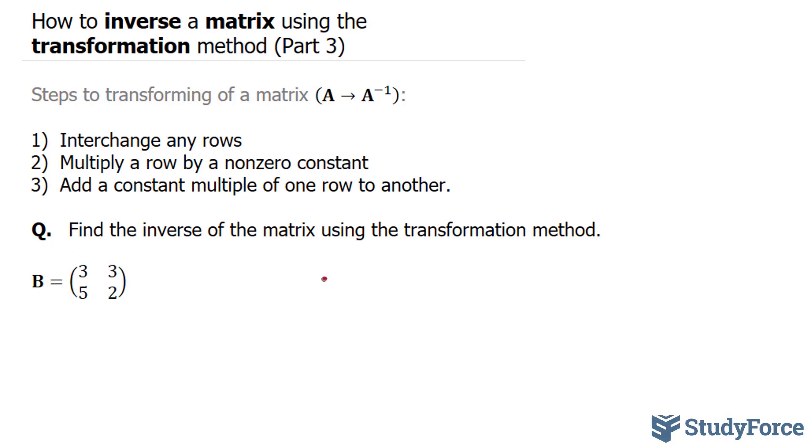So I'll rewrite this. And this is supposed to be converted into 1, 0, 0, and 1. This is its identity matrix.